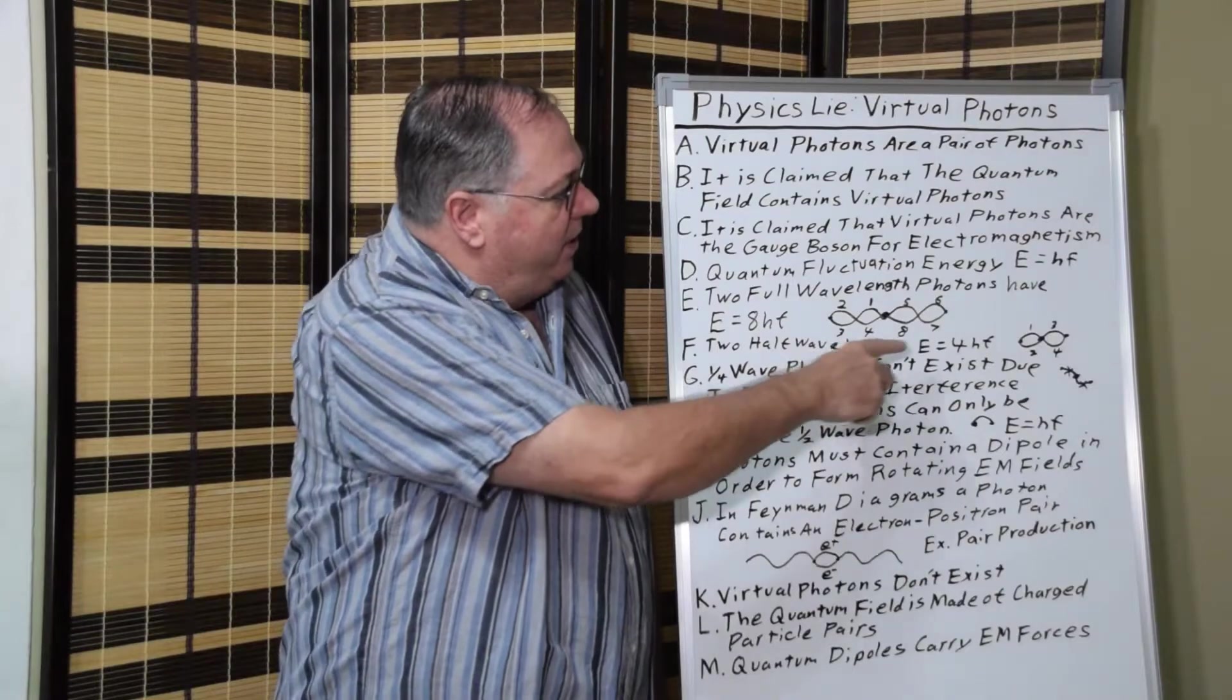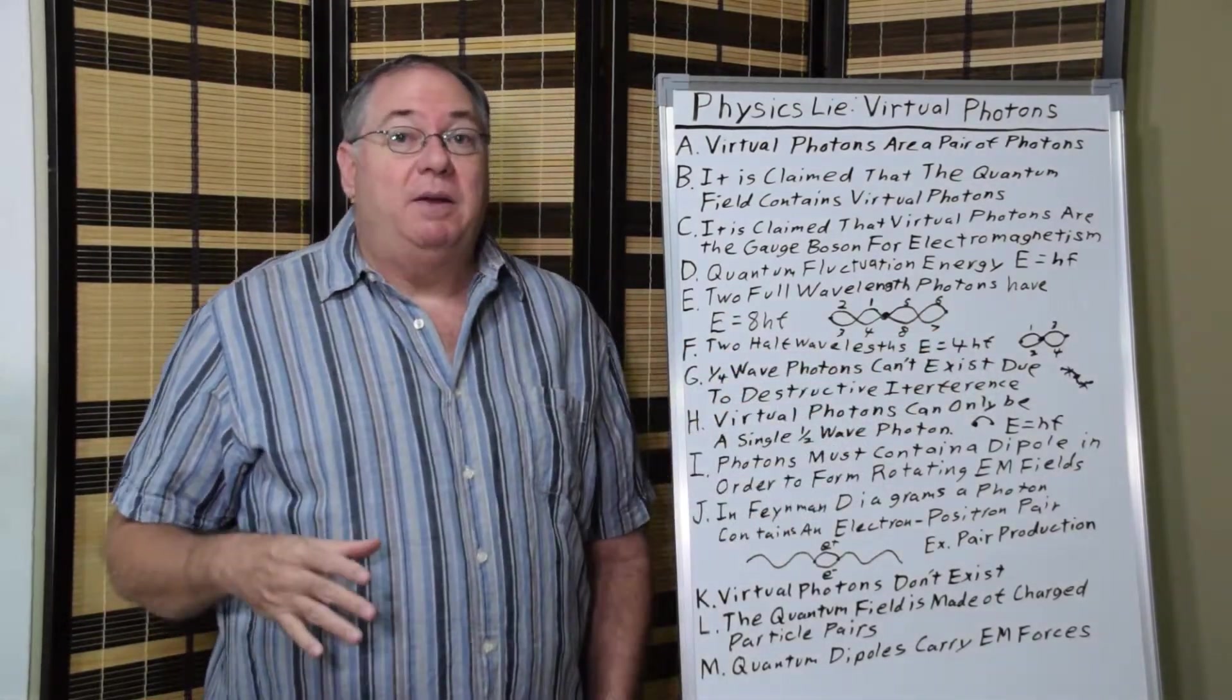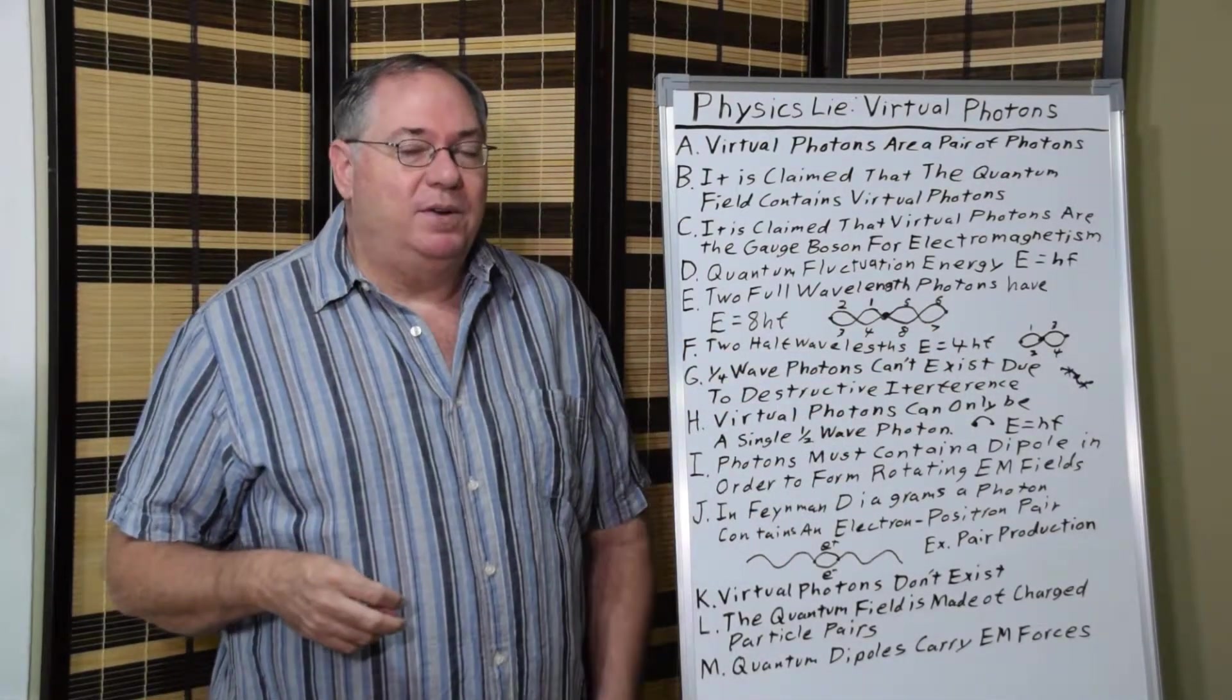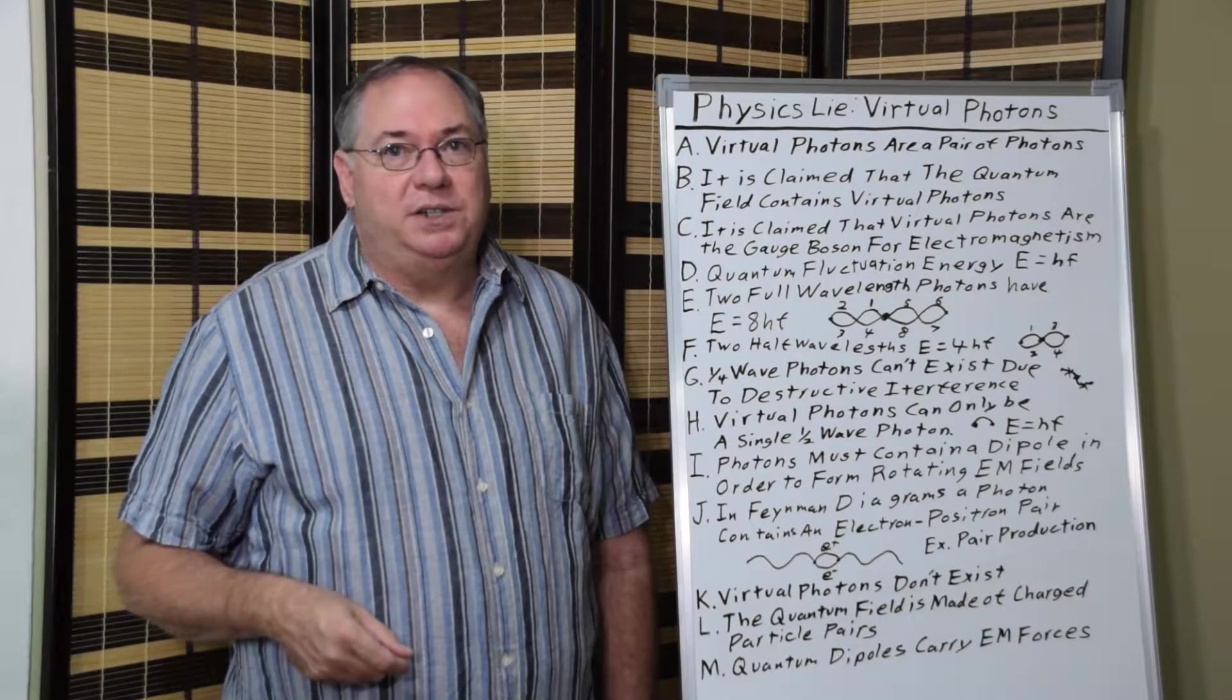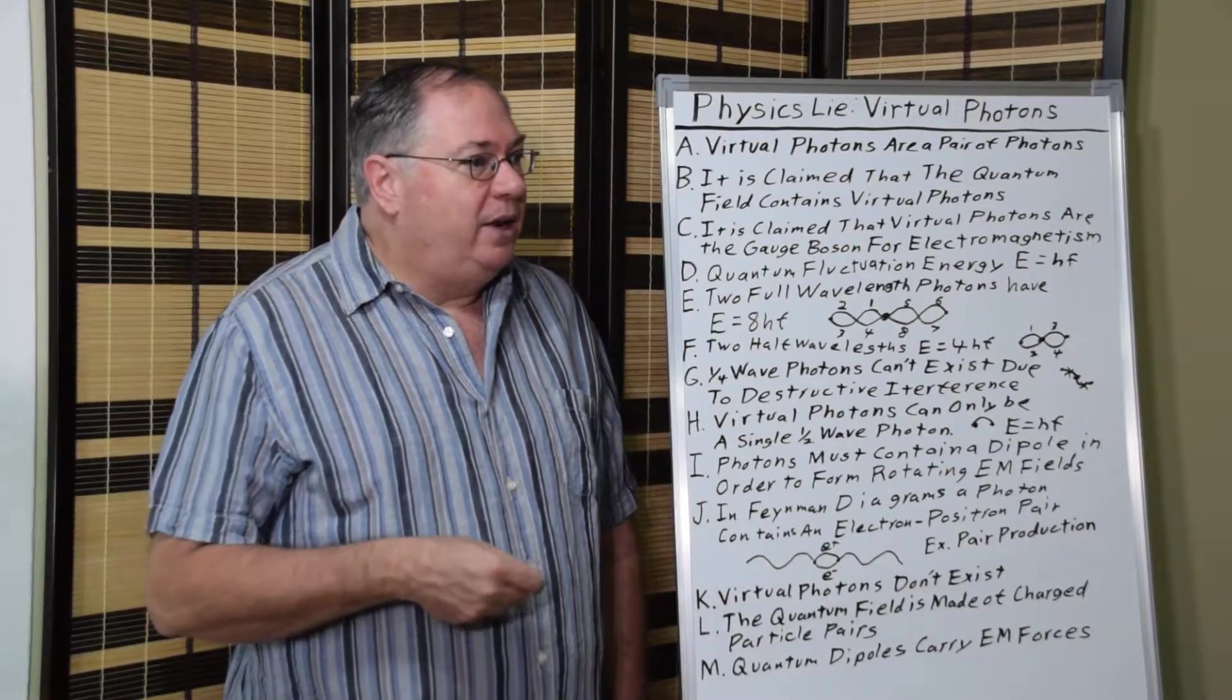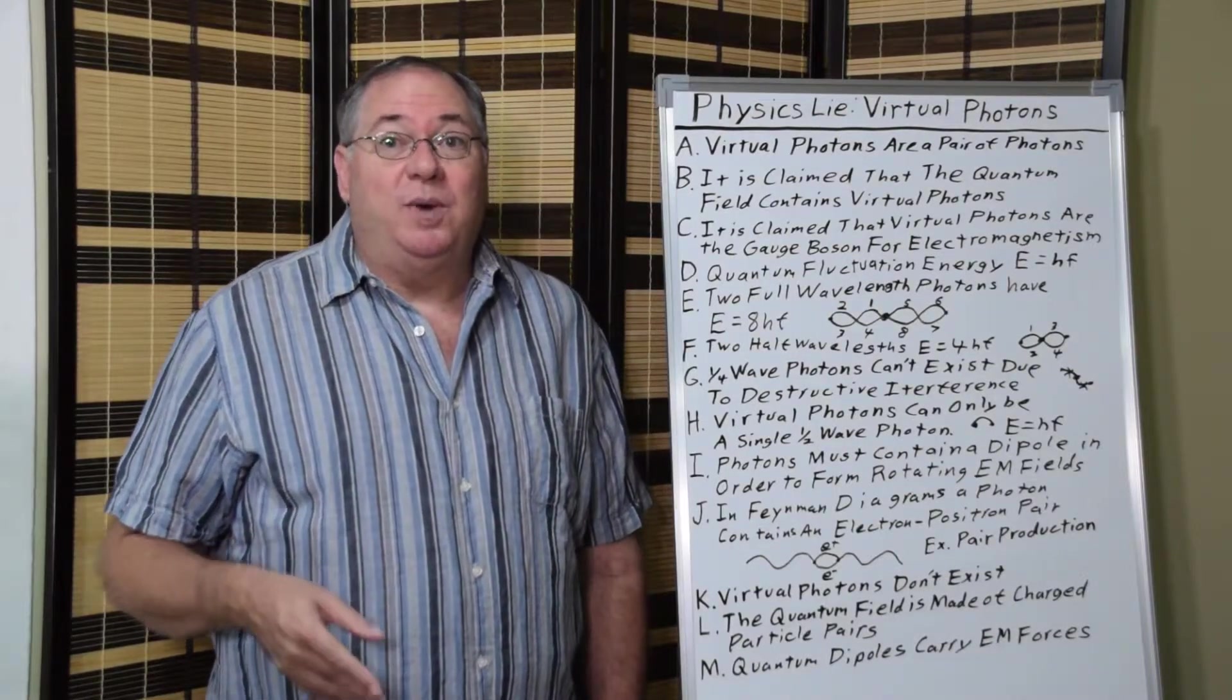Then you cut it short and you say, okay, we'll try it with half wavelength photons. Well, then you only have 4 HF, which is still 4 times too much energy. And then you go, okay, well, we'll try a quarter wave.